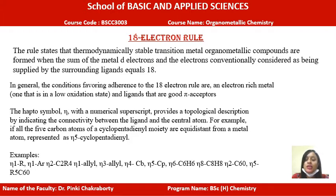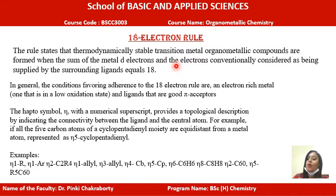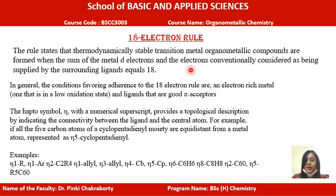What is the 18 electron rule? This is an electron counting rule which is applicable for transition metal containing organometallic compounds. It states that any transition metal containing organometallic compound whose total electron count — that is, the sum of the metal d electrons (or in some cases valence electrons) and the electrons donated by the ligands — should be equal to 18, only then they are considered as stable organometallic compounds.